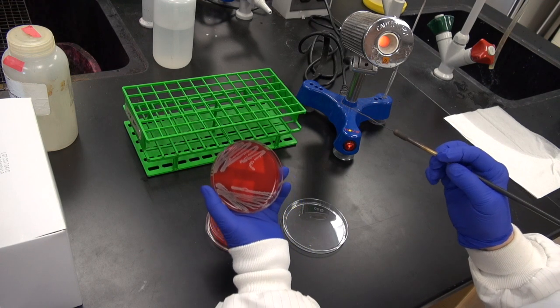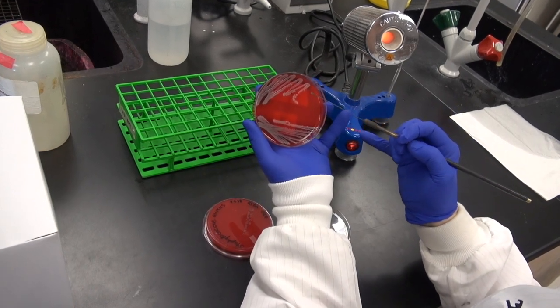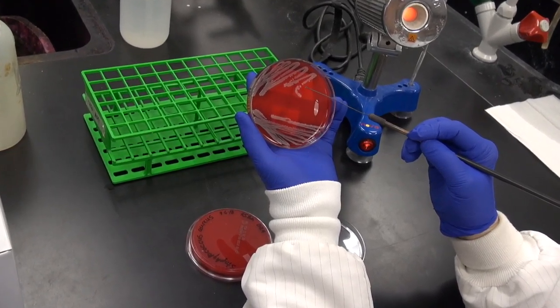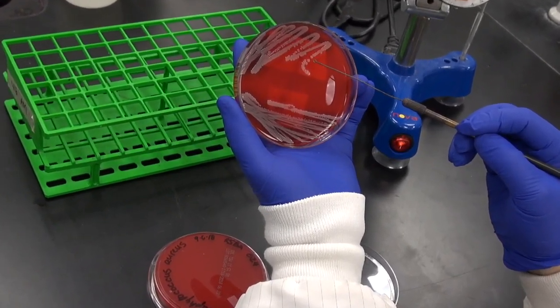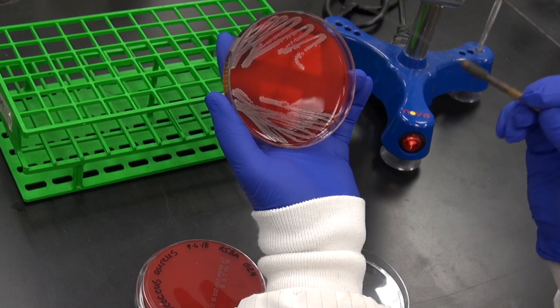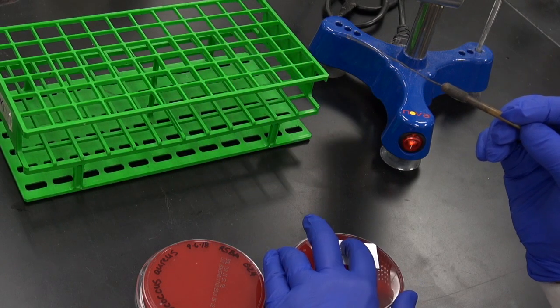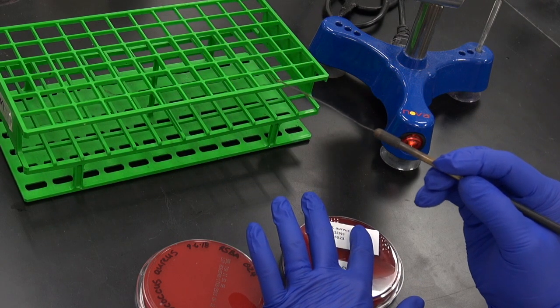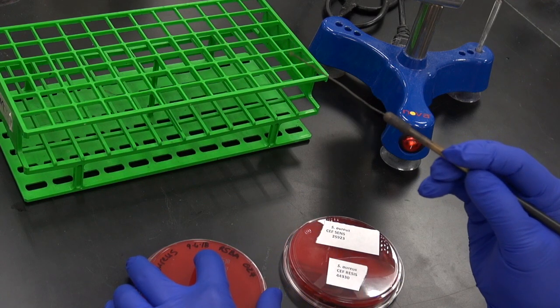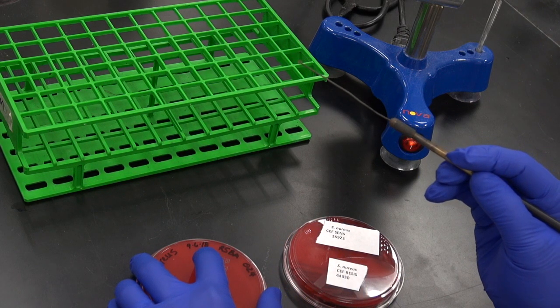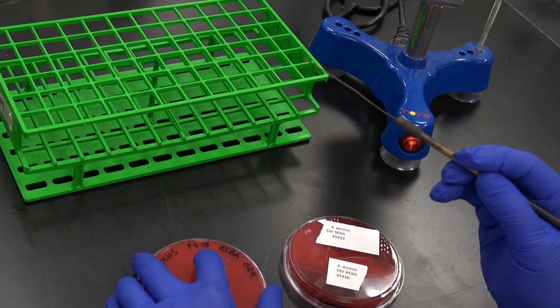Still holding the loop in our dominant hand, open the original culture plate by lifting the agar side of the plate and holding it in your other hand. Touch one isolated colony with the loop to pick up some bacteria. You don't need very much, so just touching the colony with the loop will give you plenty. Close the plate to avoid contamination from the environment.